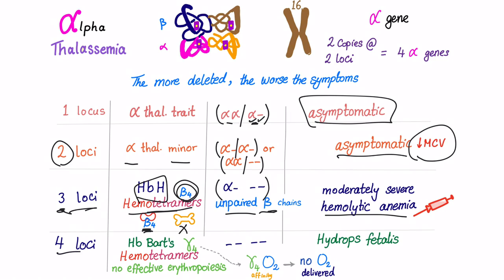Number four, which is the worst of the worst, is called hemoglobin Bart's. What's hemoglobin Bart's? All of the alphas are deleted. So gammas form tetramers. They're called hemoglobin Bart's. And of course there is no effective erythropoiesis. Why? This gamma 4 has very high affinity to oxygen, so I cannot deliver oxygen to tissue since it's bound to the gamma. What are the symptoms? Hydrops fetalis. Death in utero. The baby dies in the uterus.